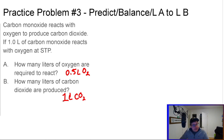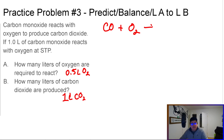If you didn't, let's do it together. First, write the chemical reaction: carbon monoxide (CO) reacts with oxygen (O2) to produce CO2.